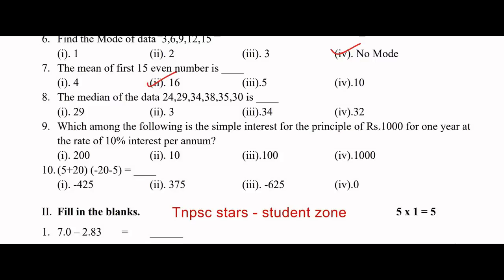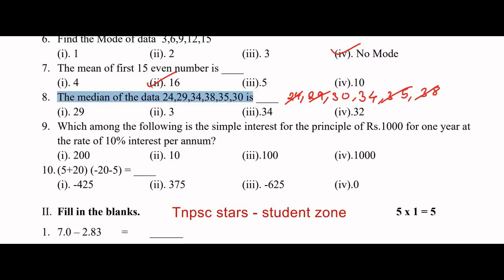Median: first arrange in ascending order — 24, 29, 30, 34, 35, 38. Cancel first and last repeatedly until two middle numbers remain: 30 and 34. Add them: 30 plus 34 equals 64, divided by 2 equals 32. So the median is 32, option 4.